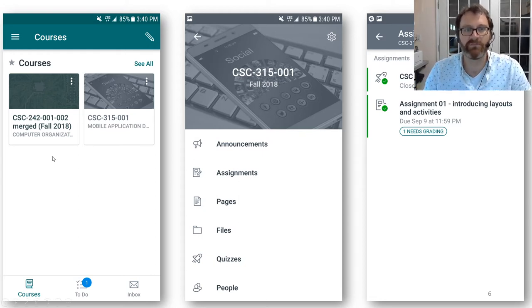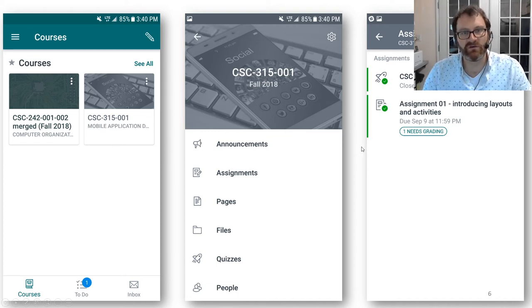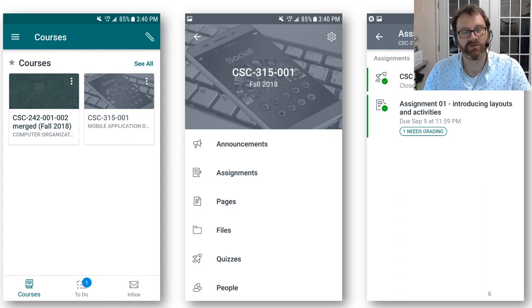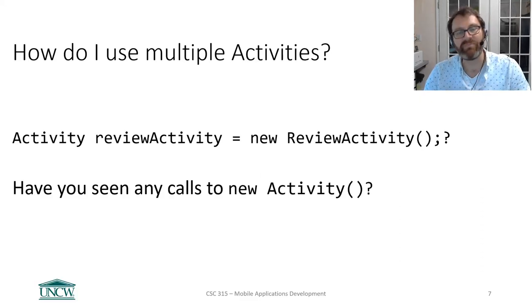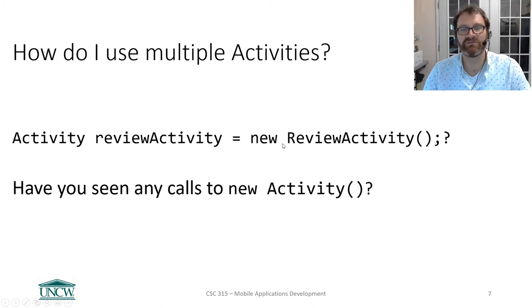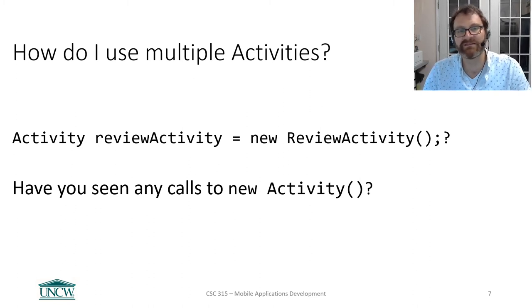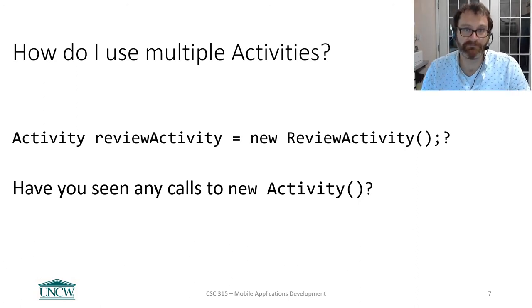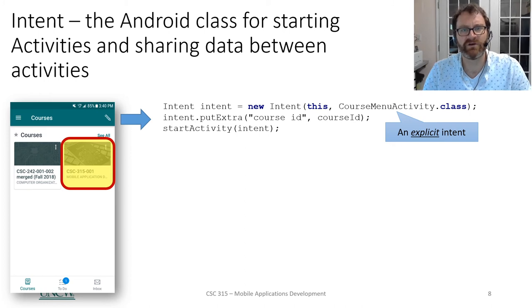Going back to the issue of multiple activities and intents: most applications have multiple activities — they have multiple screens. Here's a screenshot from the Canvas app that we use at UNCW, and each one of these screens is a different activity. But the question is, how do I create multiple activities and tie them together? In the code you've seen so far, you have never seen a call to 'new' that opens up a new activity. That just does not happen. So how do you launch a different activity?